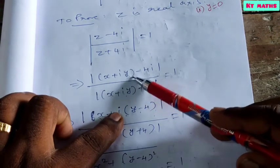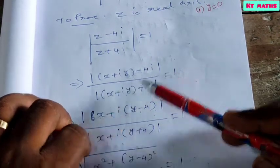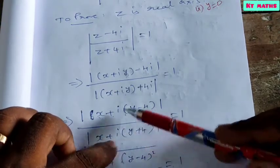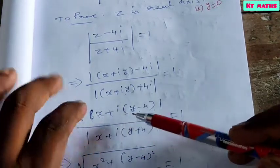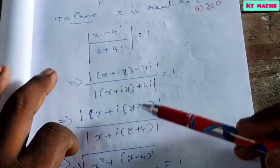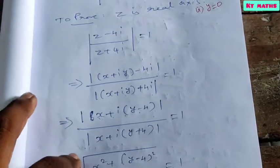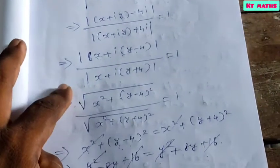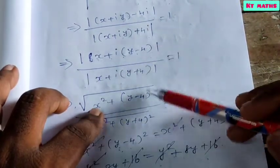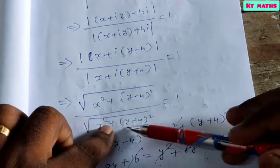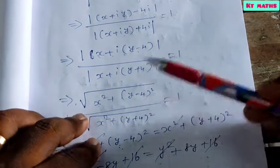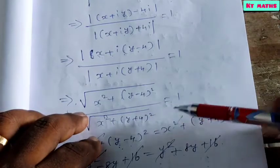We get x plus i(y minus 4) in the numerator and x plus i(y plus 4) in the denominator. Taking the modulus using the formula: root of x squared plus y squared, we get root of (x squared plus (y minus 4) squared) by root of (x squared plus (y plus 4) squared).